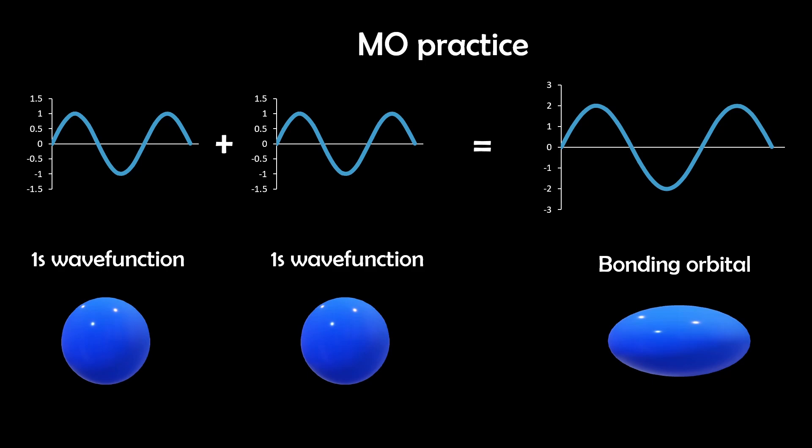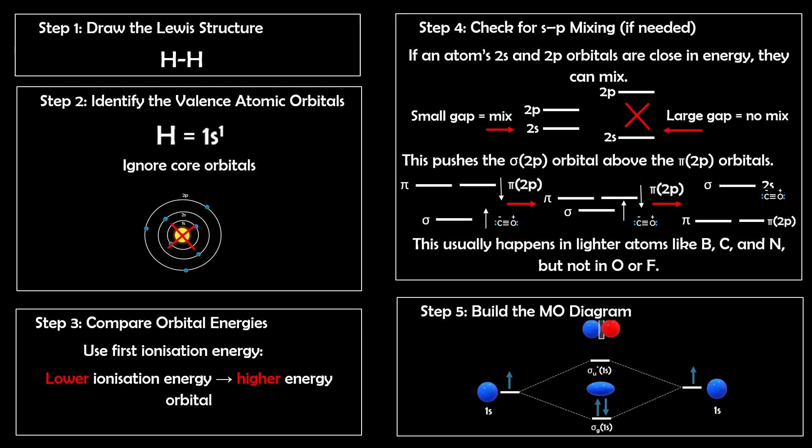It can be tricky to know where to start when constructing molecular orbital diagrams, but here's a step-by-step method you can follow every time. Step 1: Draw the Lewis structure. This gives you a rough idea of bonding, lone pairs, and molecular symmetry.